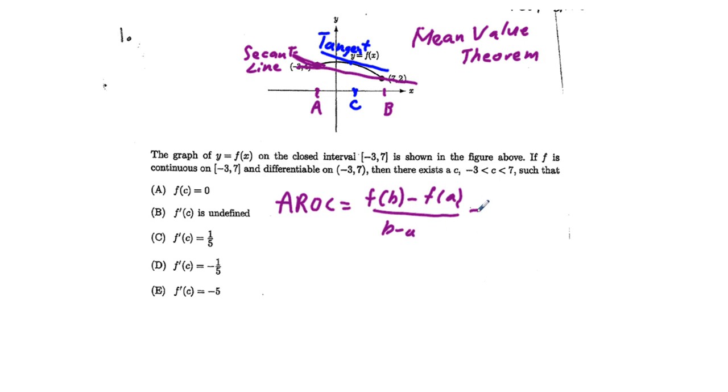We have the average rate of change, or the slope of the secant line, which I'm going to abbreviate AROC, is equal to F of B minus F of A over B minus A. In this case, F of B is 2, 7 comma 2, minus F of A, negative 3 comma 4. B is 7, A equals negative 3, so we have minus negative 3.